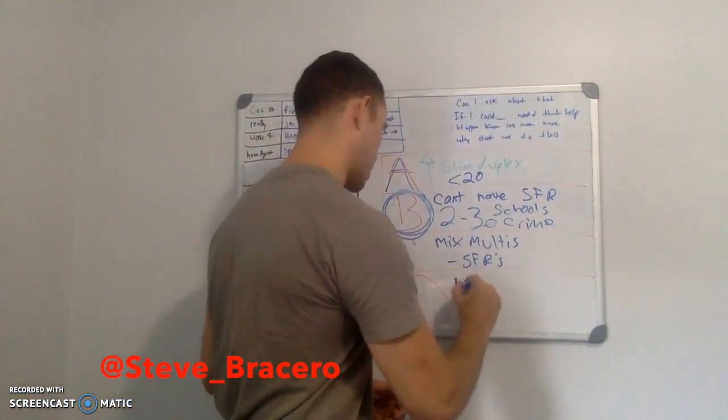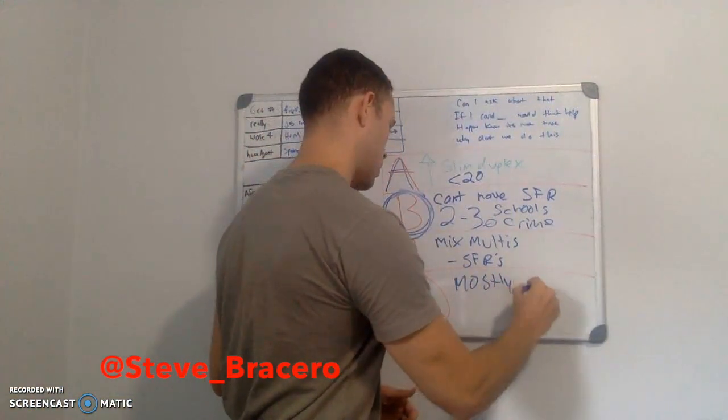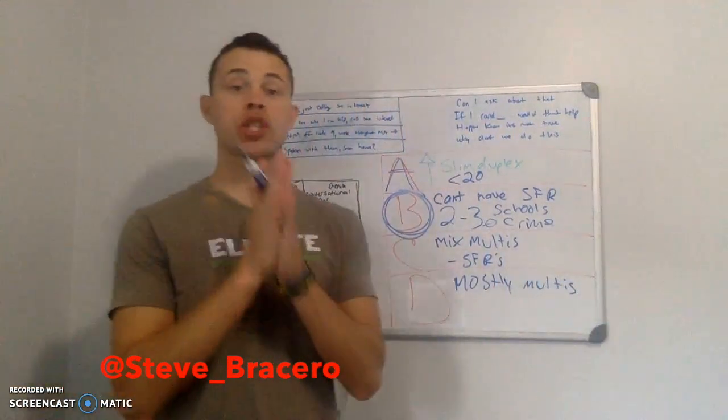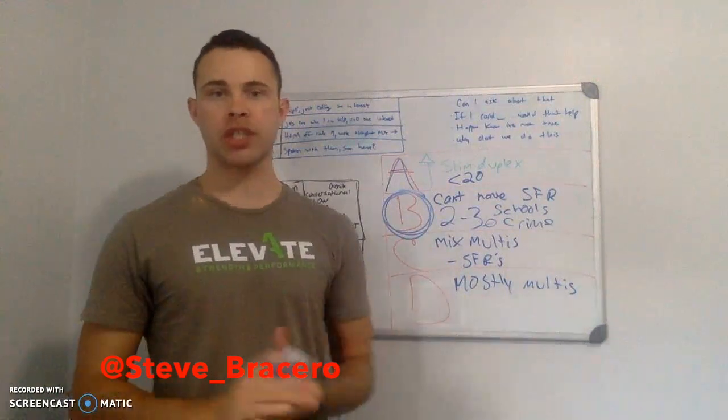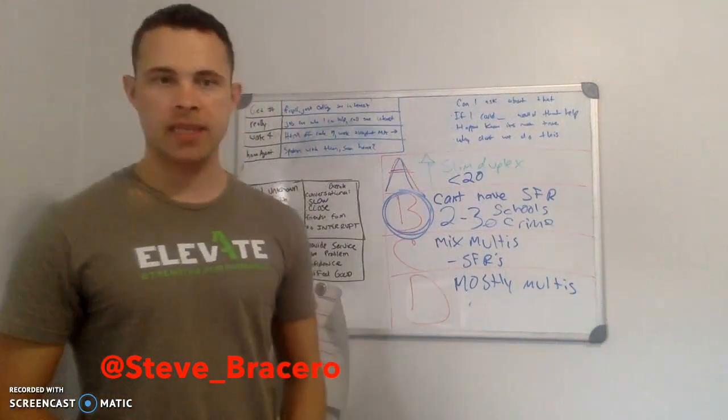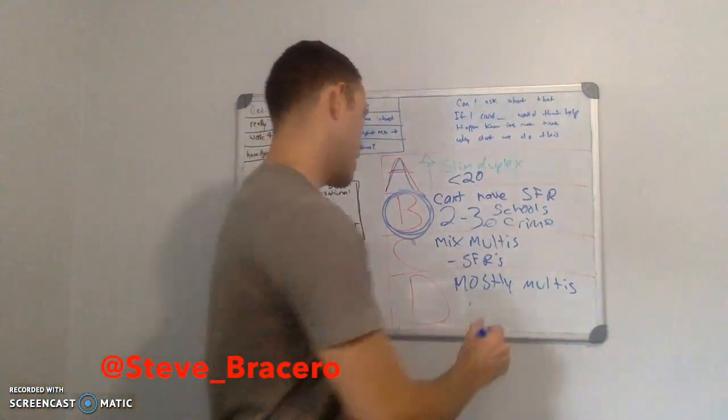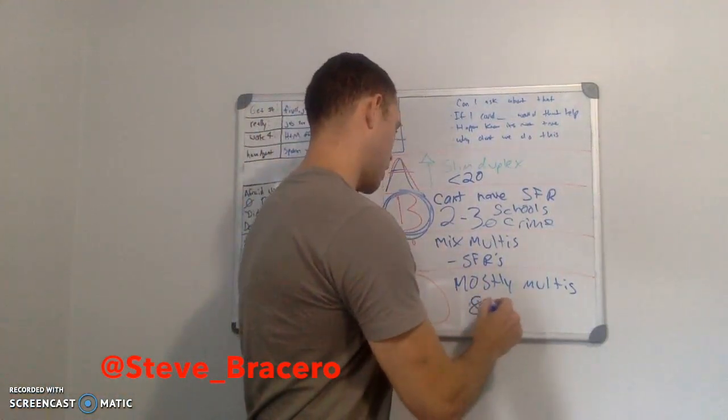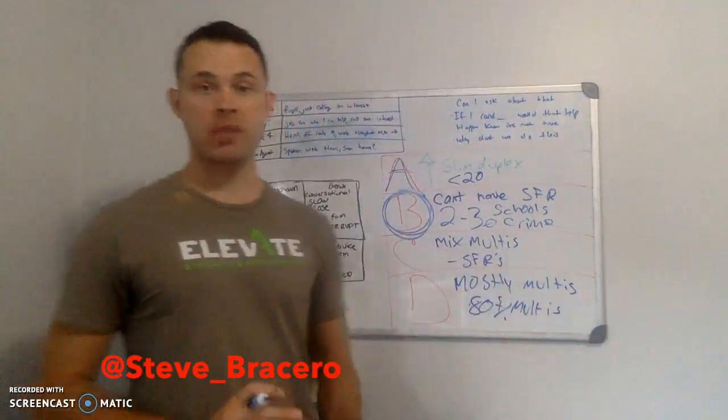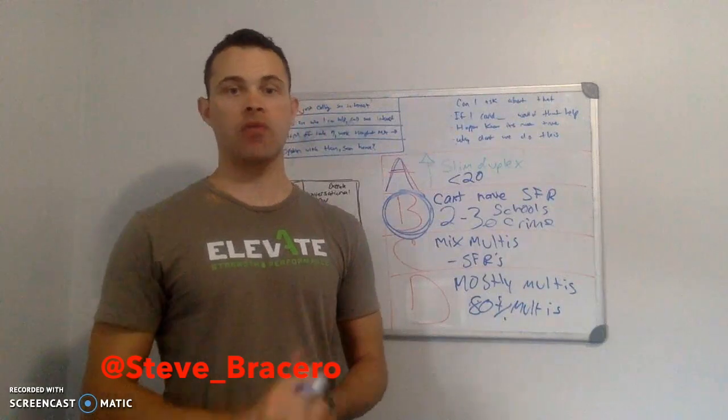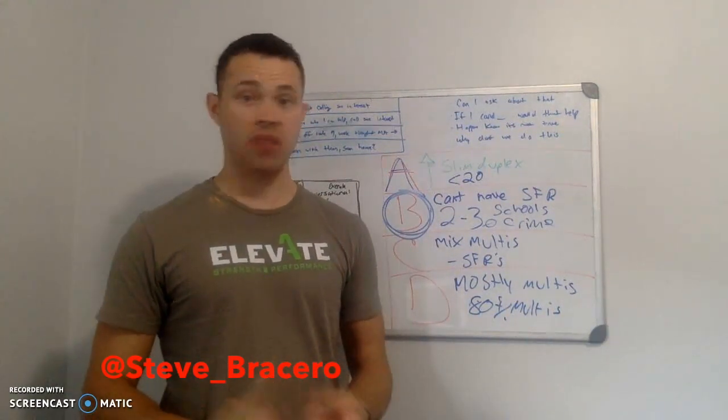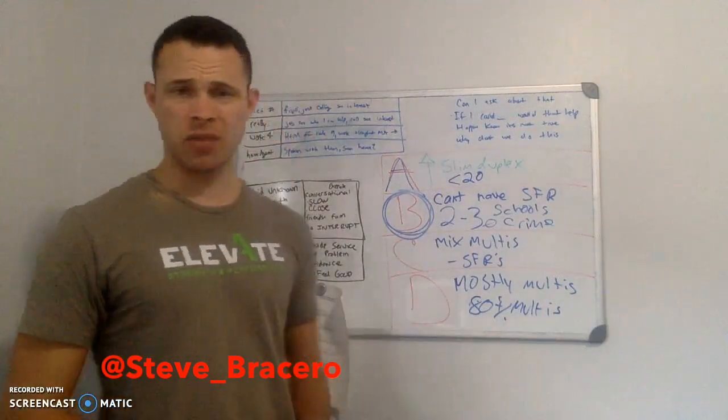When we go to a D class area, it's mostly multis. So you have, let's say, a whole street. If you look at how many homes are on the street, let's say it's 50. There's probably 90% multifamilies and that could be all triples. In this area where it's mostly multifamilies, the school system is not going to be great. There's going to be more crime. The school system is not great. Most people are renting. Here you're probably dealing with section eight.